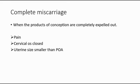For complete miscarriage, this is when the products of conception are completely expelled out. There will be pain, but the cervical os is closed and the uterine size is smaller than the period of amenorrhea because the conceptus has already been passed out.